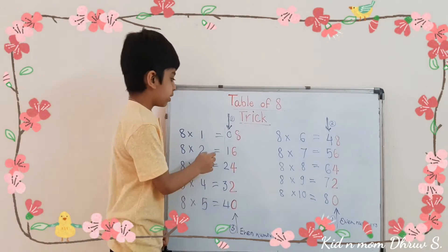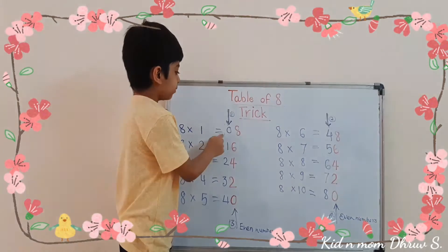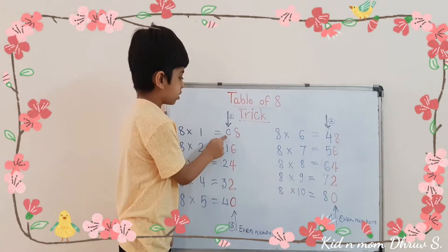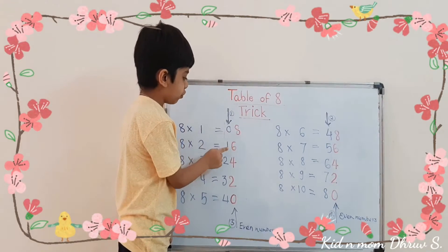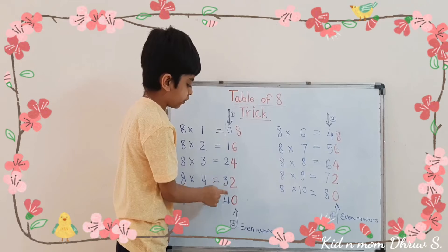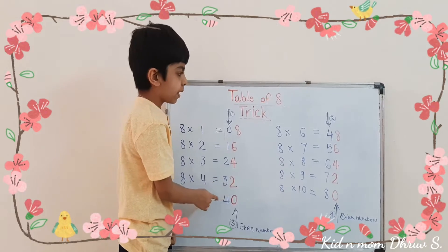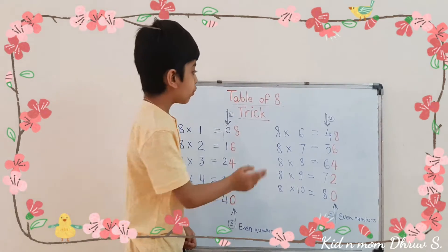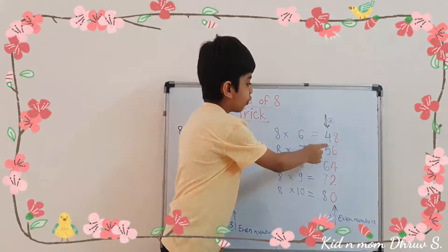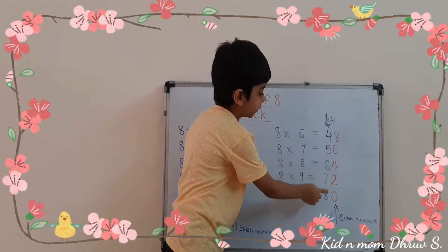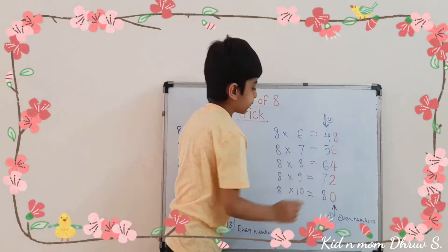Then, write here: 0, 1, 2, 3, 4. And again start from 4: 4, 5, 6, 7, 8. Good.